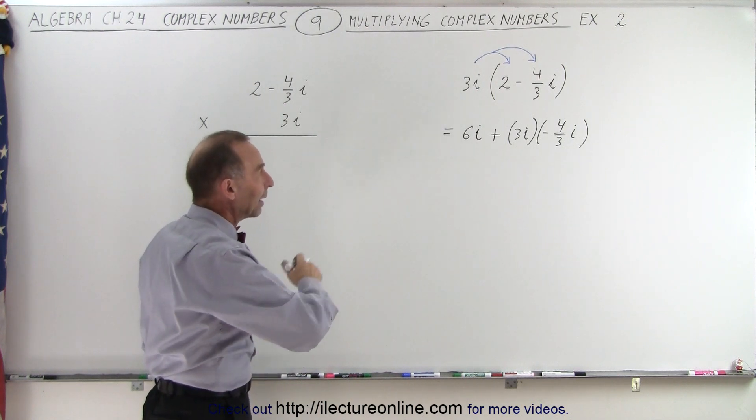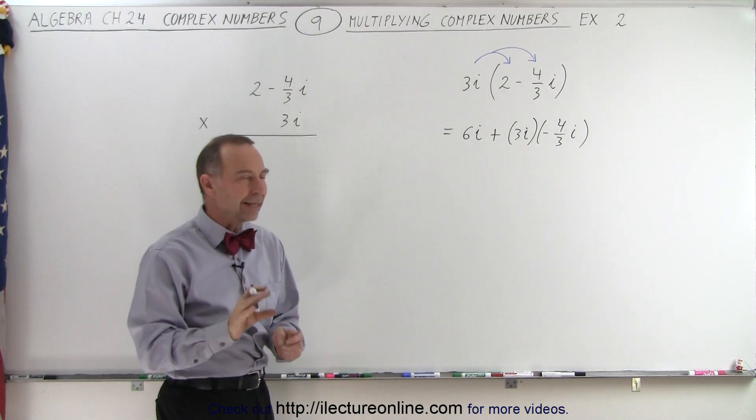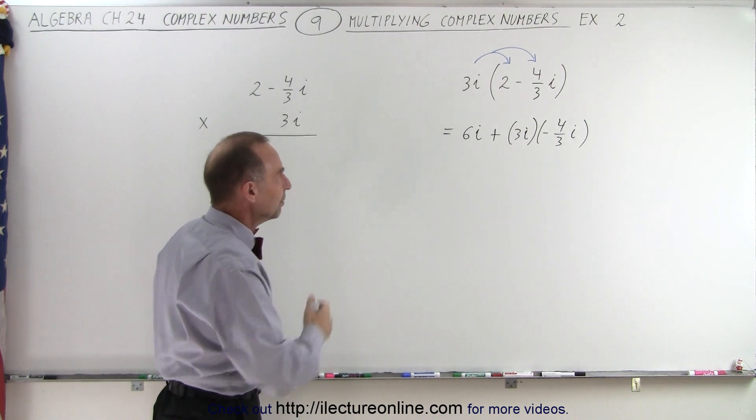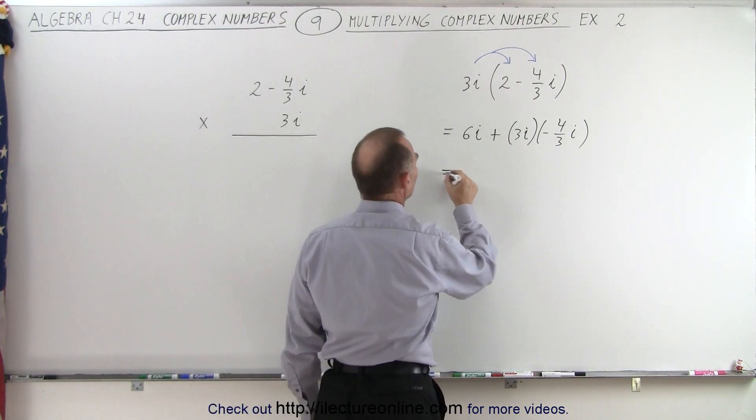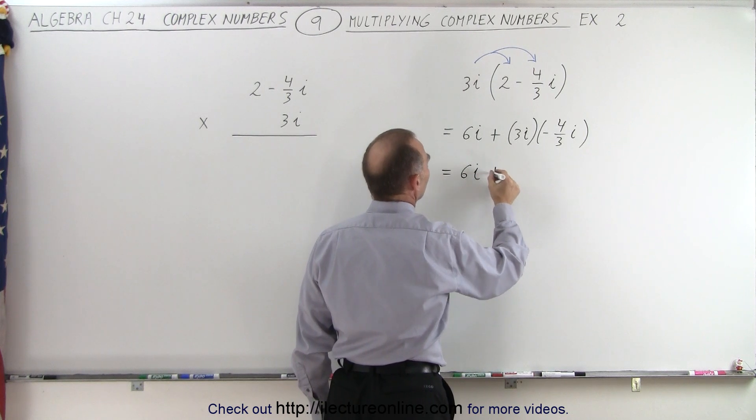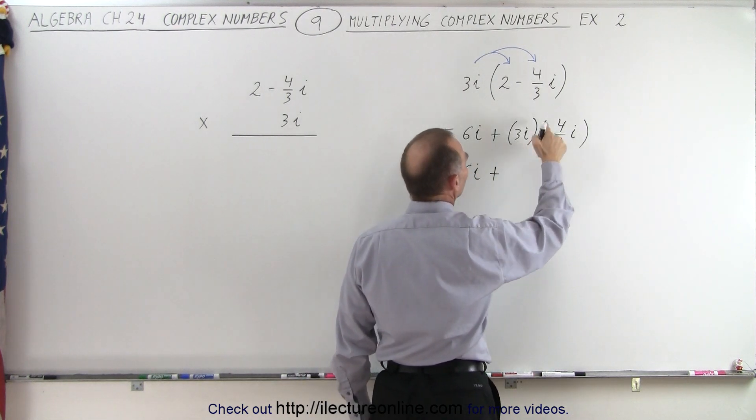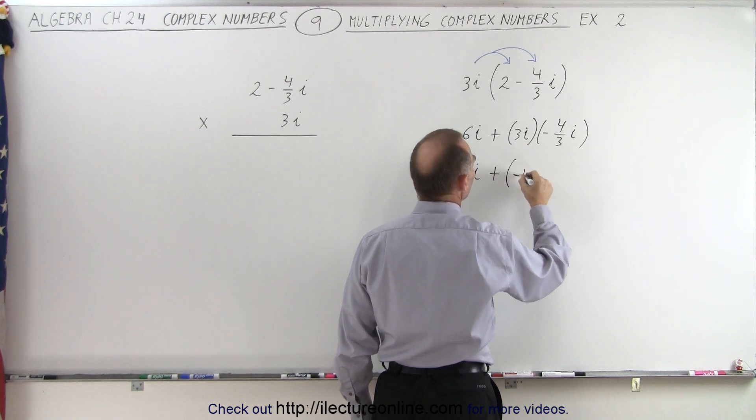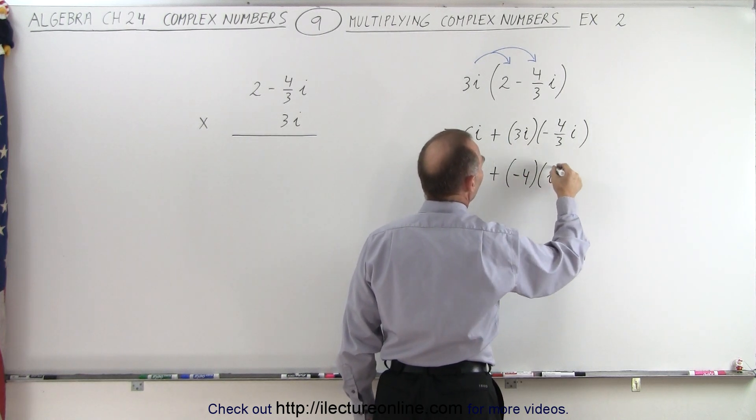Because again, when we multiply i times i, we get a negative 1, and we can get kind of confused with the signs, so sometimes it helps to go an intermediary step. So this is equal to 6i plus, now here we have 3 times negative 4/3, the 3s cancel so we're left with a negative 4 times i squared.